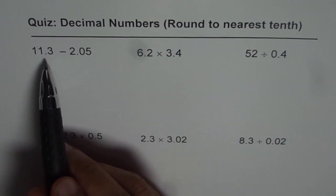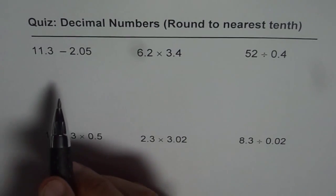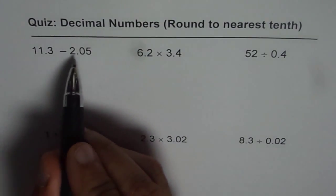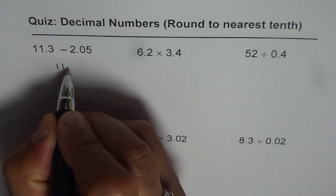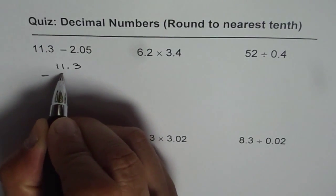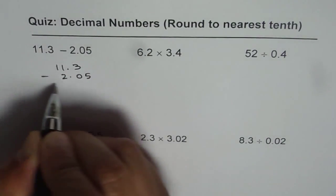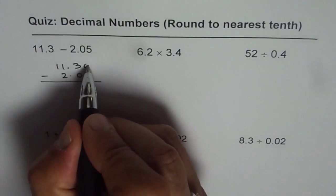The first question is 11.3 take away 2.05. The strategy is align decimals, right? So we will do 11.3 take away 2.05. Now it is just 3, we can put 0 here. Now if you want to take away, then follow the ordinary rules.